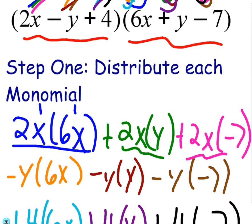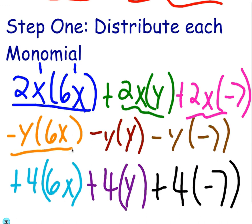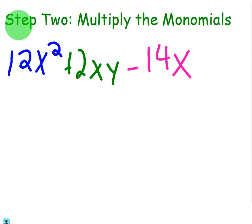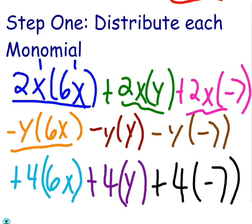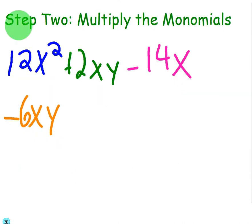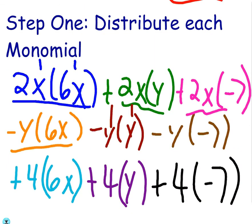Then we got minus y times 6x. Negative 6xy, right? You're just reordering. You put the coefficient first, then the x, then the y. I'm going to fill in the missing exponents here. So minus y to the first, y to the first gives you, good job, minus y squared. Then we got minus y times negative 7, so we know it's going to be positive. Positive 7y.